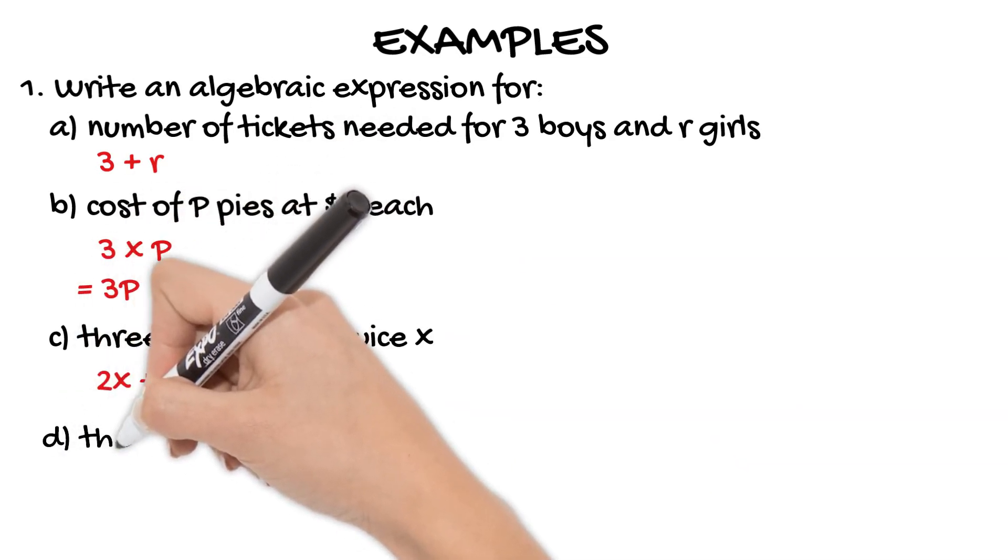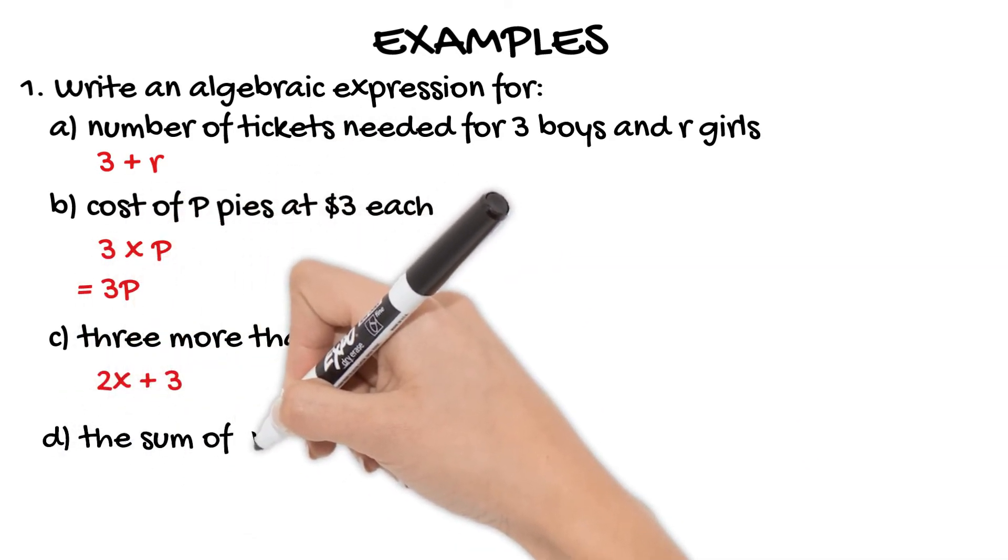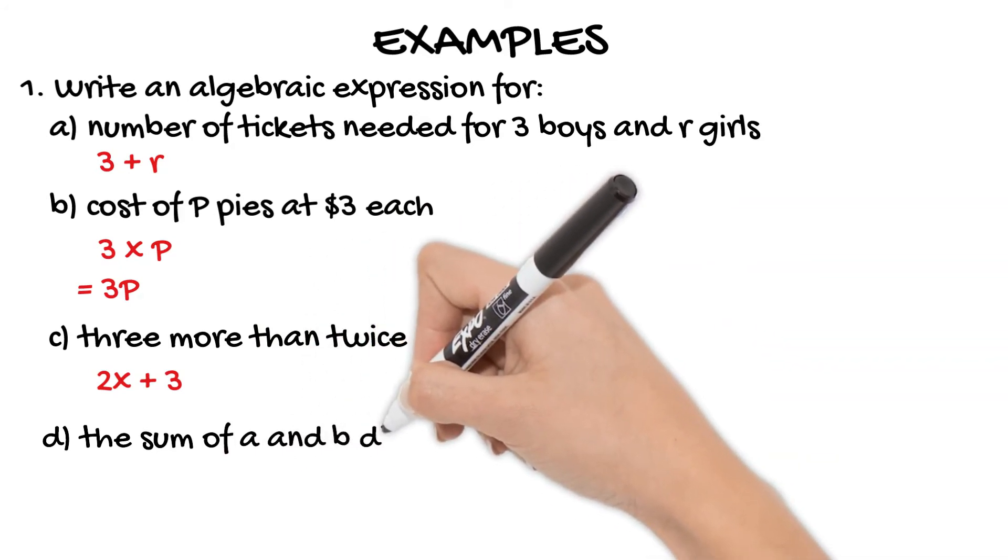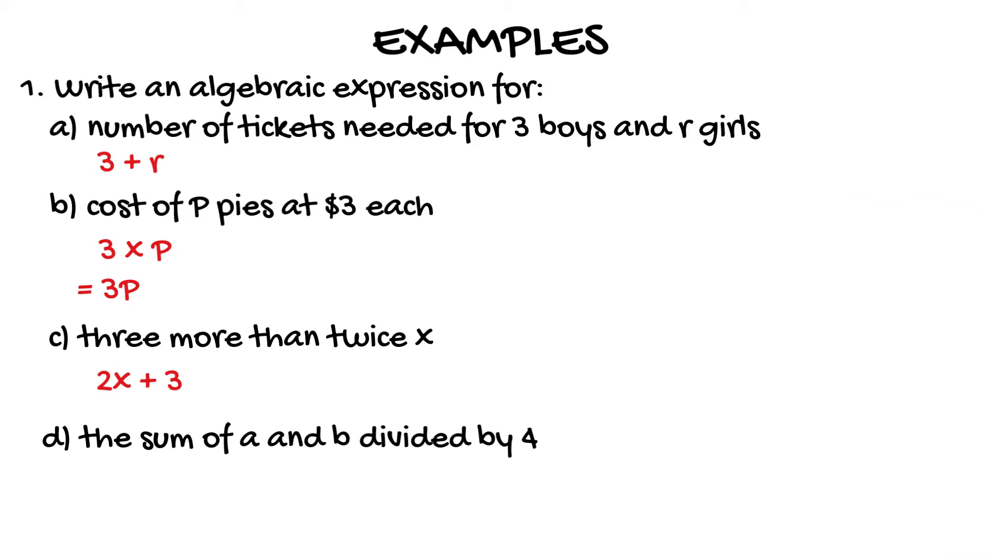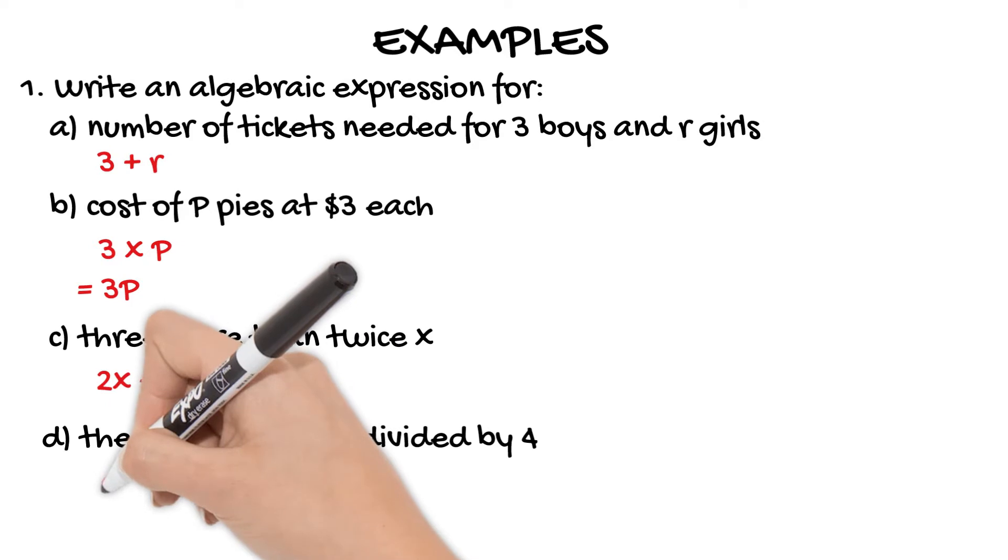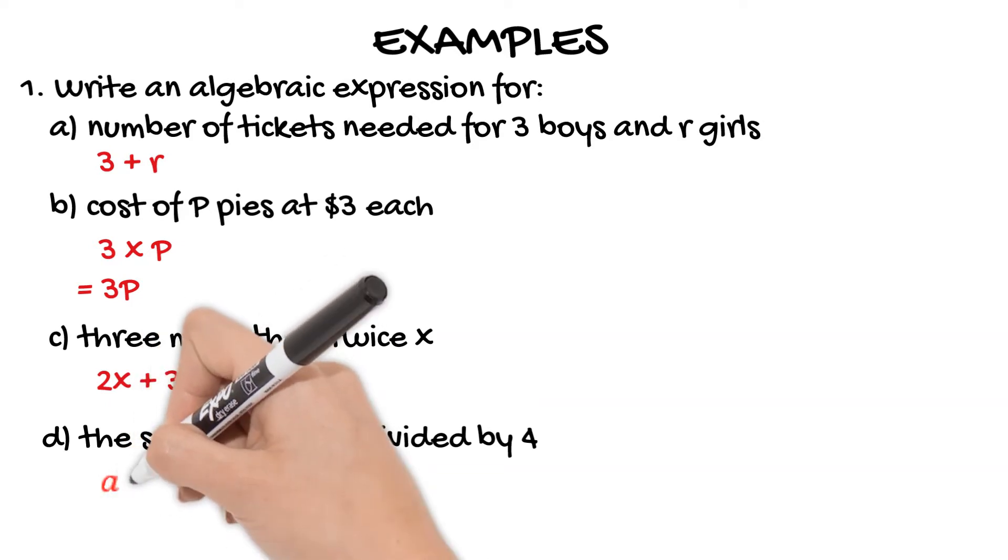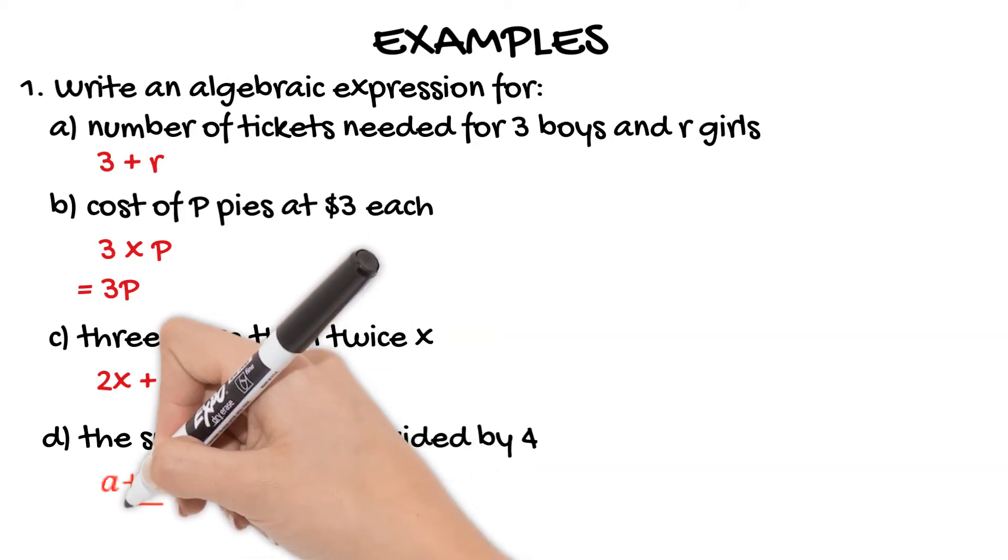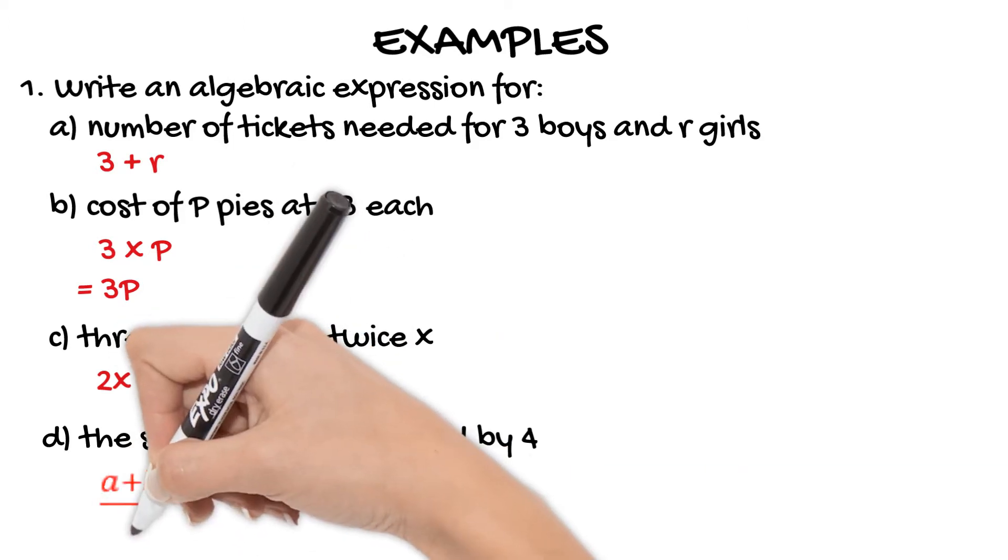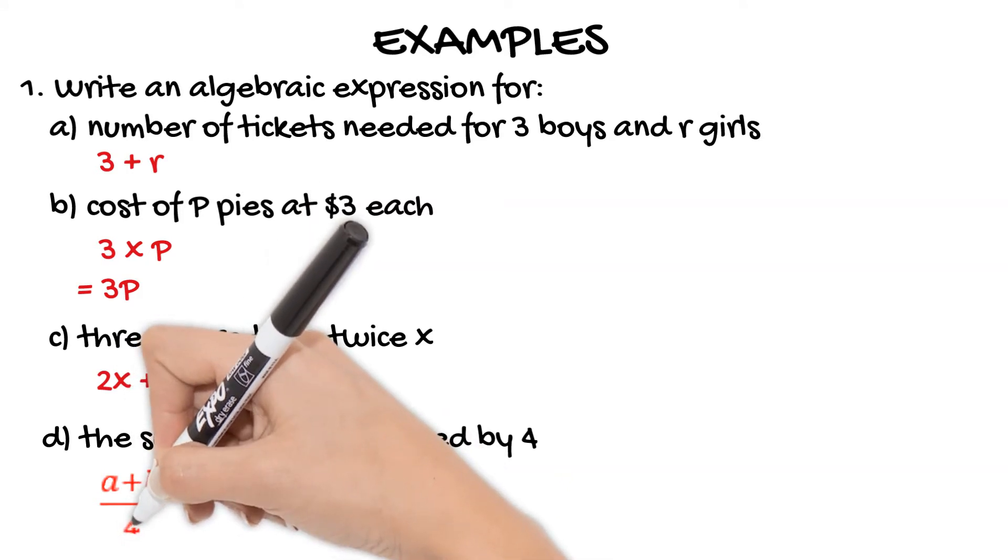The sum of a and b divided by four. Now this is where you need to read really carefully because it's not a dividing by four. It's not b dividing by four. It's the sum of a and b dividing by four. So you need to put a plus b on the top of the fraction and then all over four. As I said we don't actually use division symbols when we are writing algebraic expressions in their simplest form.